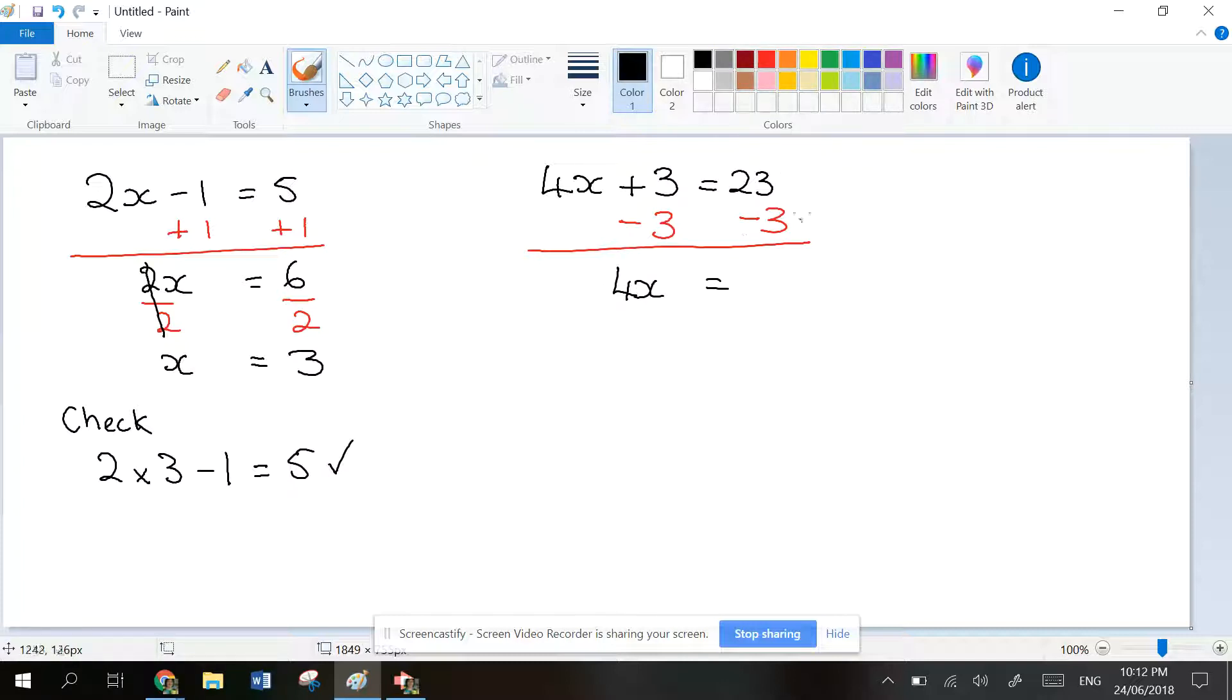And on the right-hand side, 23 minus 3. Balance it out. That gives you 20. Now let's look at this new equation.